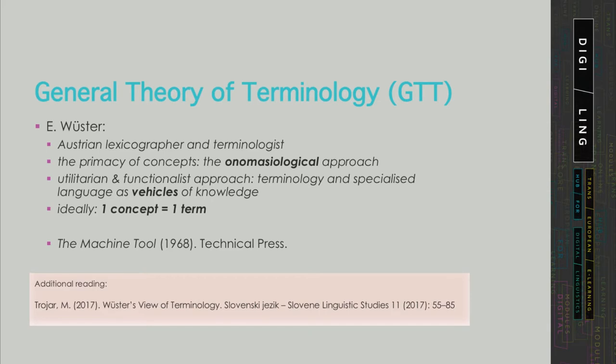This sort of progression, where concepts are considered to be of prime importance, is also called the onomasiological approach and was described by Eugen Wüster, an Austrian lexicographer who is considered to be the father of terminology theory and also the founder of the so-called general theory of terminology or GTT.